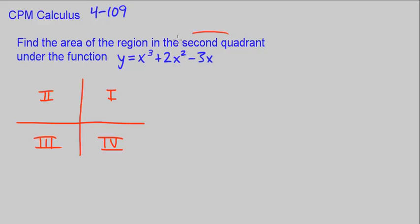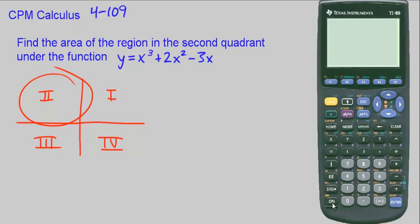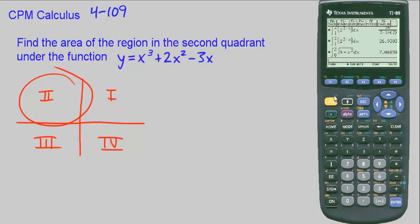So we want the area in the second quadrant, the area under the curve in quadrant 2. Let's go ahead and graph our curve to get a good perspective of what it's going to look like. I'm going to put in x cubed plus 2x squared minus 3x and graph this.